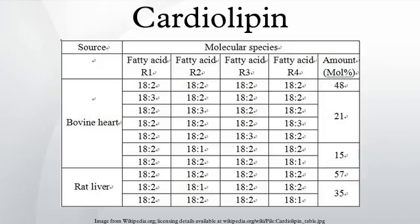The name cardiolipin is derived from the fact that it was first found in animal hearts. It was first isolated from beef heart in the early 1940s. In mammalian cells, but also in plant cells, cardiolipin is found almost exclusively in the inner mitochondrial membrane, where it is essential for the optimal function of numerous enzymes involved in mitochondrial energy metabolism.